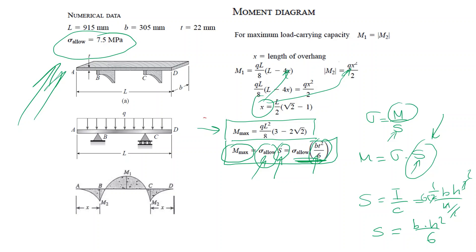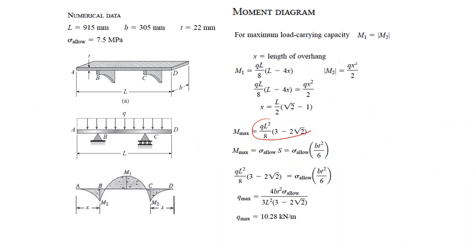If you know your allowable sigma and the section modulus for your beam geometry, you can calculate the maximum moment that must not be exceeded. We now have two equations: the maximum moment from a distributed load q, and the maximum allowed moment for the given geometry. Setting them equal, the only unknown is q.